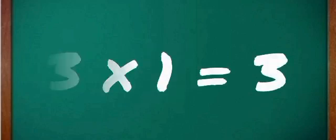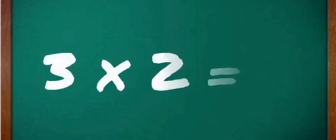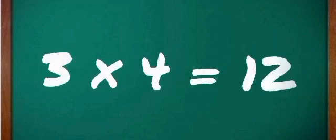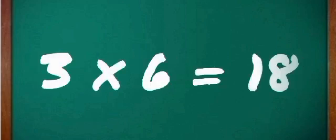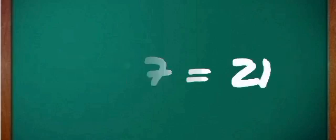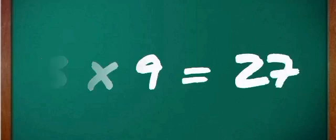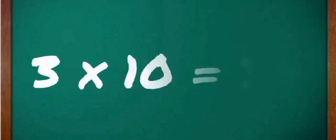3 one's are 3, 3 two's are 6, 3 three's are 9, 3 four's are 12, 3 five's are 15, 3 six's are 18, 3 seven's are 21, 3 eight's are 24, 3 nine's are 27, 3 ten's are 30. Okay, now 4.